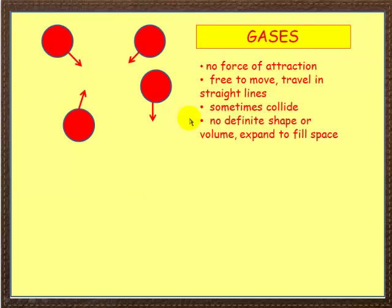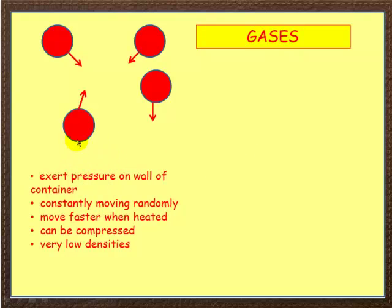And when they evaporate, they become gases. Now, gases have no forces of attraction between them. They're free to move. They travel in straight lines. Sometimes they collide. They have no definite shape or volume, and they expand to fill any available space. If you put them in a container, they exert pressure on the wall of the container, because they're constantly moving randomly.